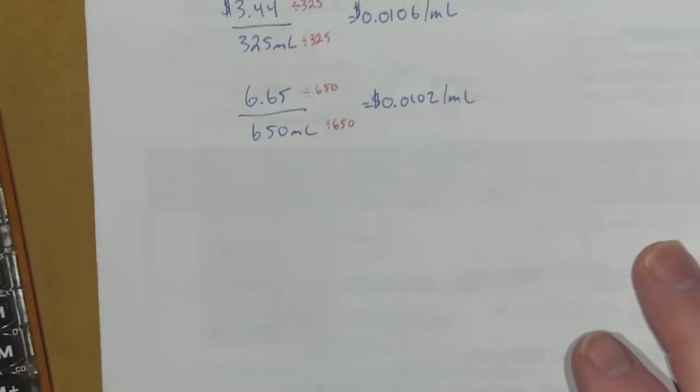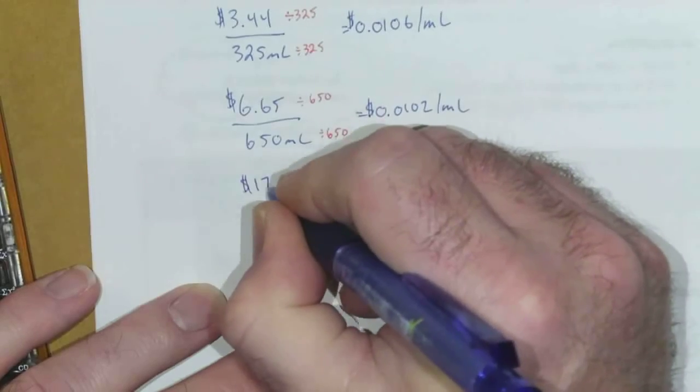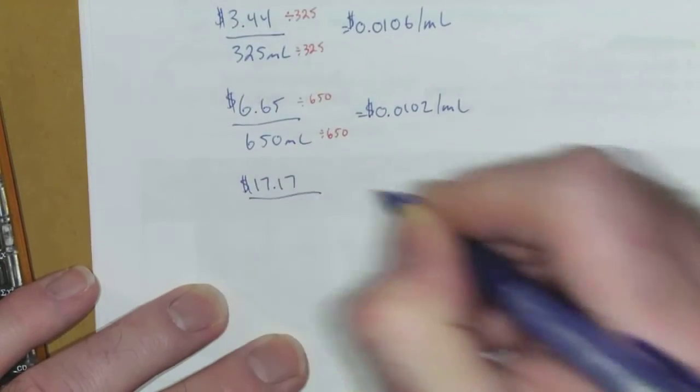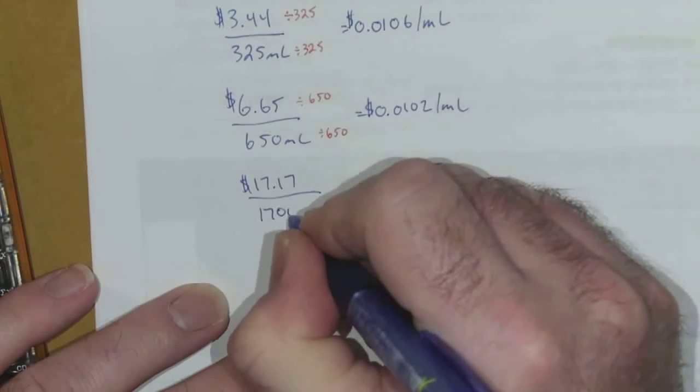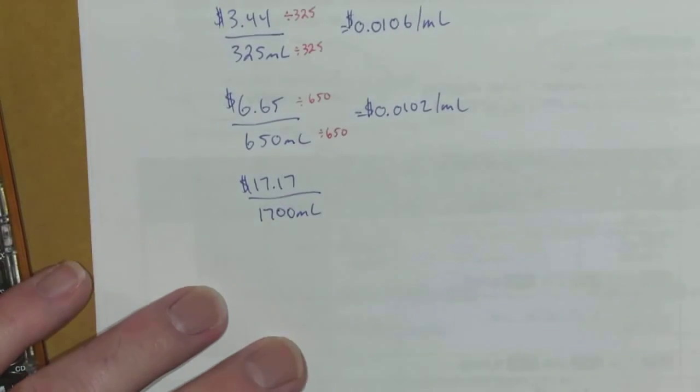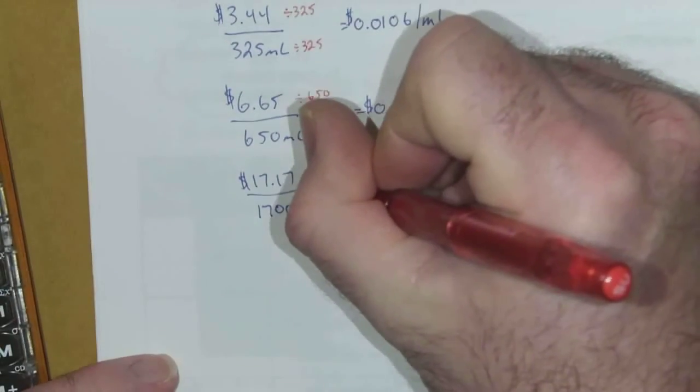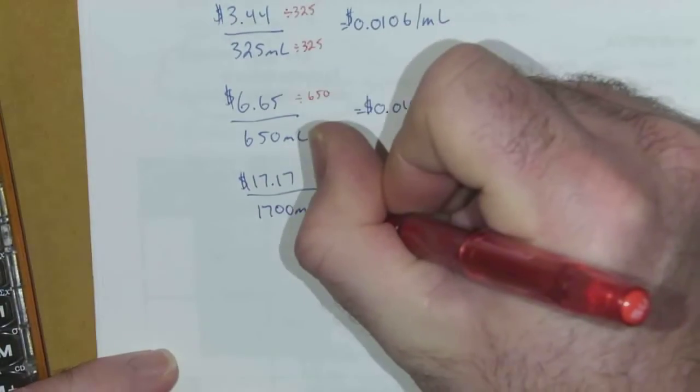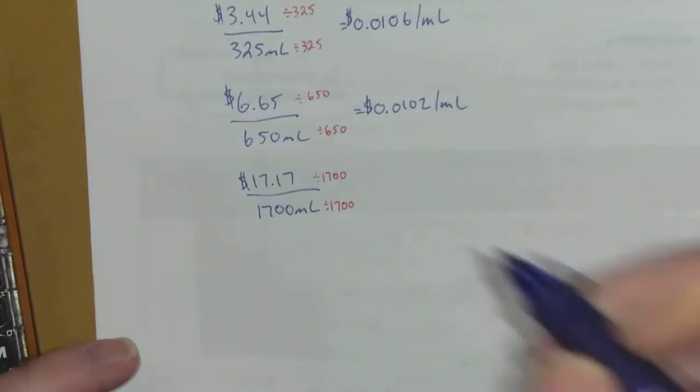And then the last one is $17.17 for, remember we converted, 1700 milliliters. We're going to divide the top by 1700 and the bottom by 1700, and then let's see what that works out to in the calculator.